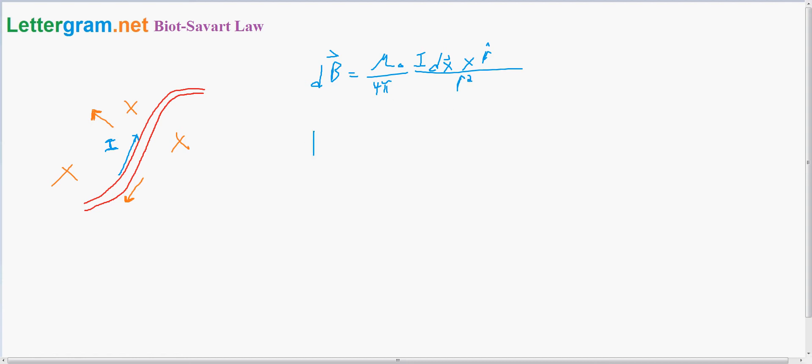Which comes out to the magnetic field is equal to constant i divided by 4π integral of dx cross r divided by r squared.